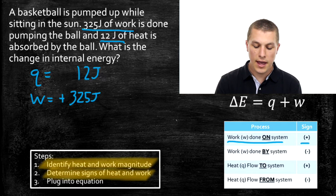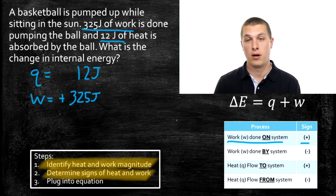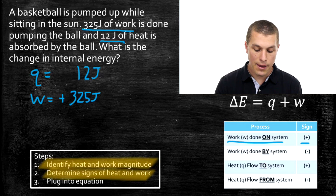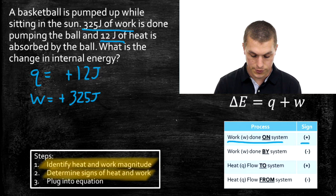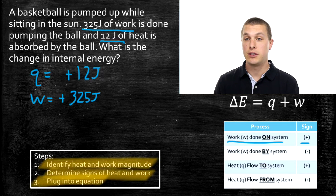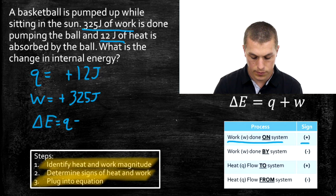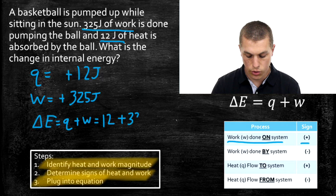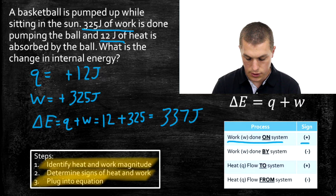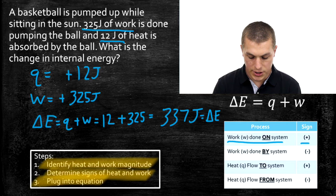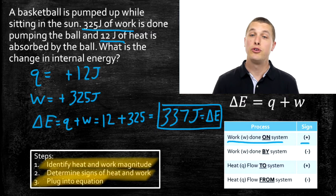Now let's look at the heat change. It says 12 joules of heat is absorbed by the ball, and it's sitting in the sun, so the ball is gaining energy from the sun. That makes Q also positive. Now for the easy part — we plug into our equation: delta E equals Q plus W. Since both are positive, that's 12 joules plus 325 joules, which gives us 337 joules for our change in internal energy.